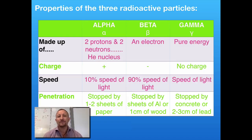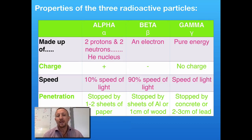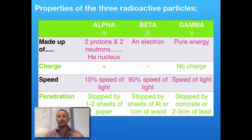If we look at alpha particles, they're made up of two protons and two neutrons — they represent the helium nucleus. I must stress that they are a helium nucleus, not a helium atom. There are no electrons involved in the production of this particle. Because there are two protons, it has a positive charge — overall charge of plus two. It's a lumbering giant when it comes to radioactive particles. It only travels at 10% the speed of light, and its penetration can be stopped by only a couple of sheets of paper. So alpha: positive, big, heavy, slow moving.